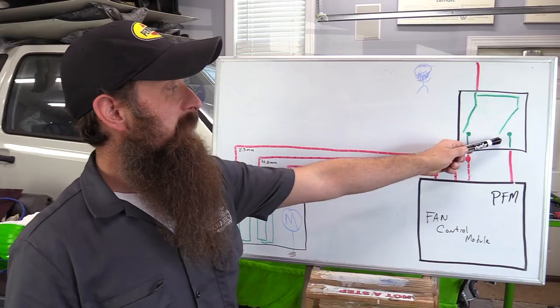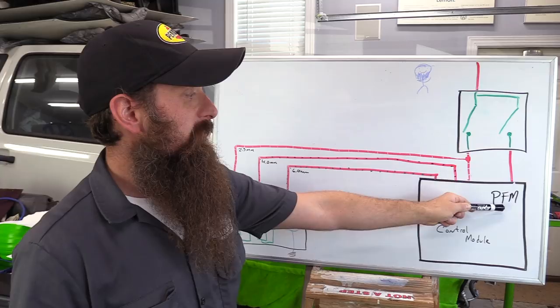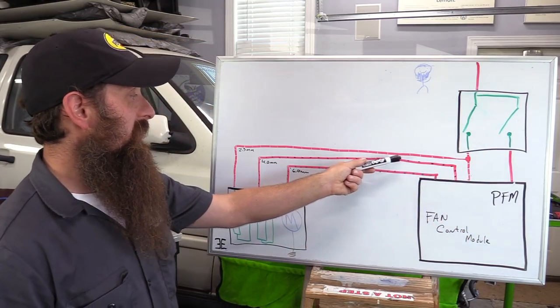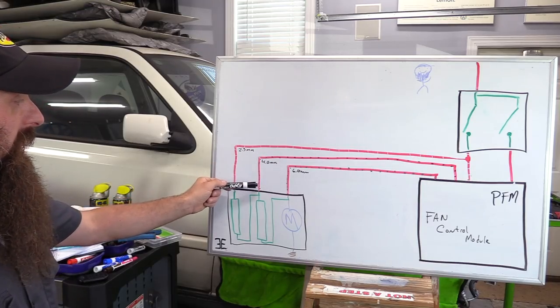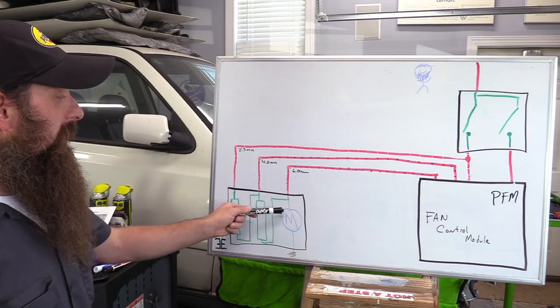When we hit that next temperature threshold, our thermal switch closes on the other side. This sends power to the fan control module. The fan control module then sends power to our fan. It only goes through one resistor on the middle speed and then to our fan.